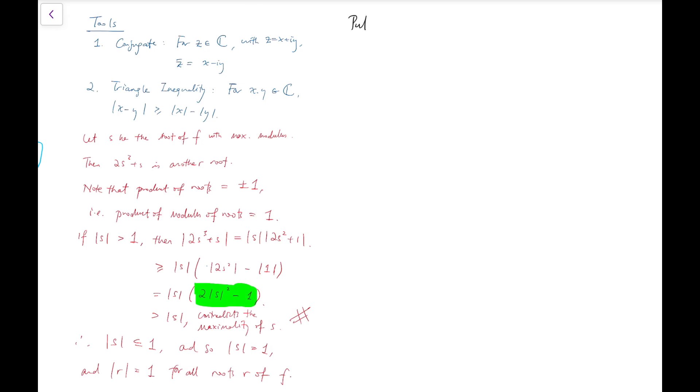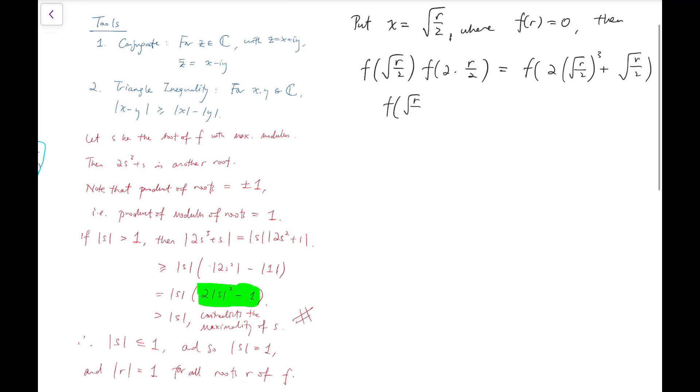After knowing the fact that all the roots have modulus to be equal to 1, then I'm going to put x equals to the square root of r over 2. So let's go into the equation where f(r) = 0. Then f(√(r/2))·f(2·r/2) = f(2·(√(r/2))³ + √(r/2)).